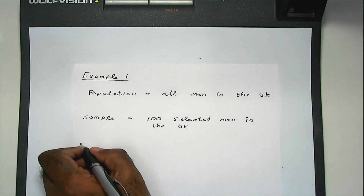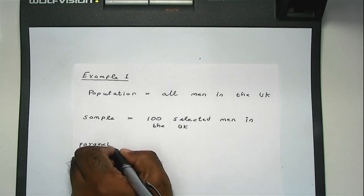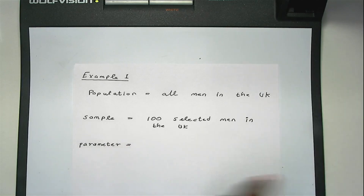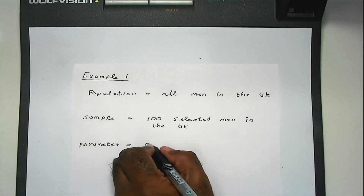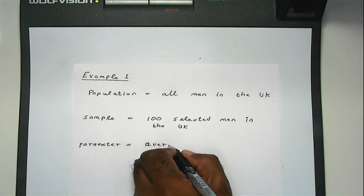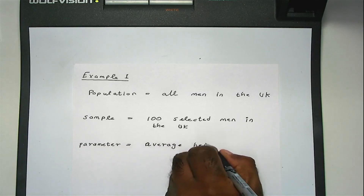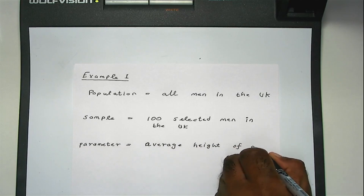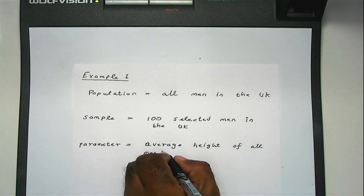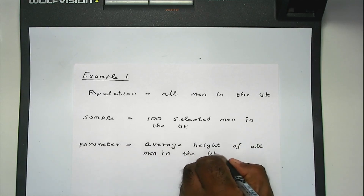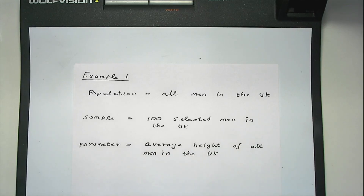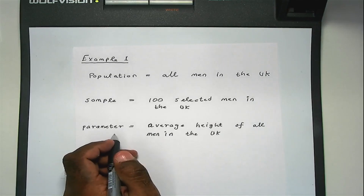The parameter is something associated with the population. For example, the average height of all men in the UK. Once again, this is impossible to compute because there are millions of men in the UK — you'd need to go out and measure their height individually, which you cannot do in practice. So the parameter is something you cannot quantify.